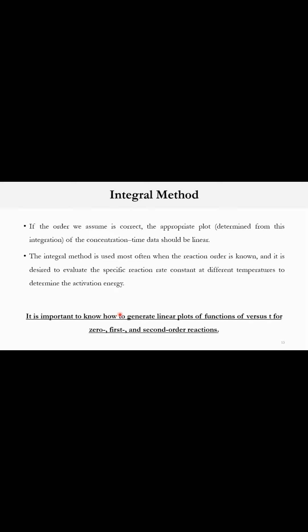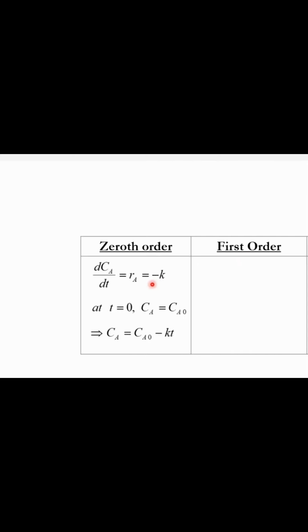It is important to know how we can generate the plots. Let's look at zero, first, and second order. For zero order, dCa/dt = Ra = -k. Once we integrate with limits at t=0, Ca=Ca0, and at t=t, Ca=Ca, we get Ca = Ca0 - kt. This is y = mx + c where y is Ca, m is -k, x is t, and the intercept is Ca0. This plot is generated between time and Ca.